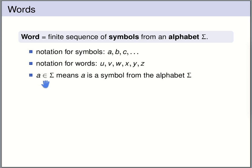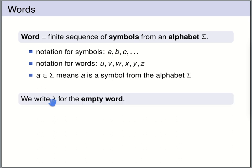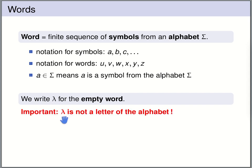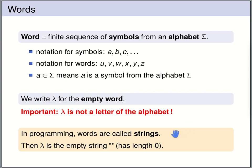We write a as element of sigma to say that a is a symbol from the alphabet sigma. We use lambda to denote the empty word — a word consisting of zero letters. It's important to understand that lambda is not a symbol from the alphabet sigma; lambda denotes a word, not a letter. In programming languages, words are often called strings, and then lambda is the empty string — just two quotes with nothing in between.